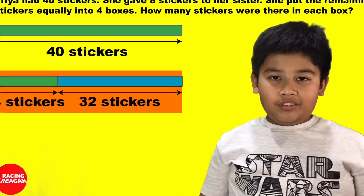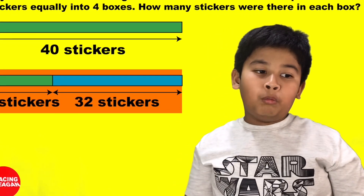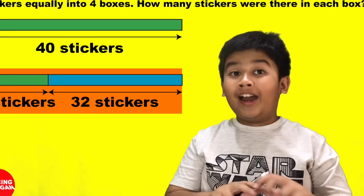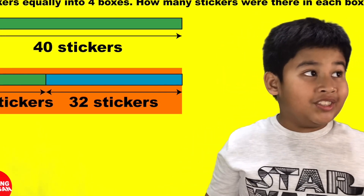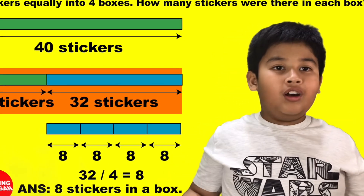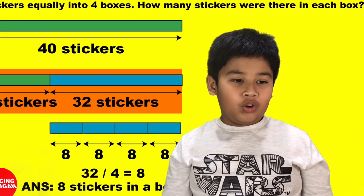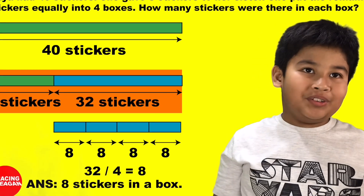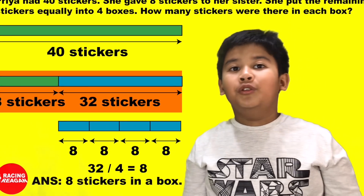You get 32 stickers left. So what do you do with the 32 stickers? You divide them, because she put them into four boxes equally. So you do 32 divided by four, and the answer is eight. She put eight stickers in each box, so the answer is eight. This is how you do this question.